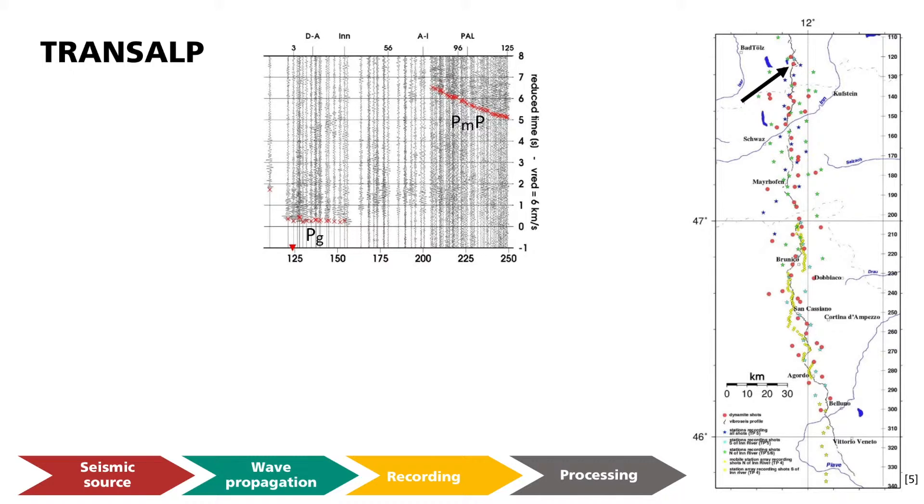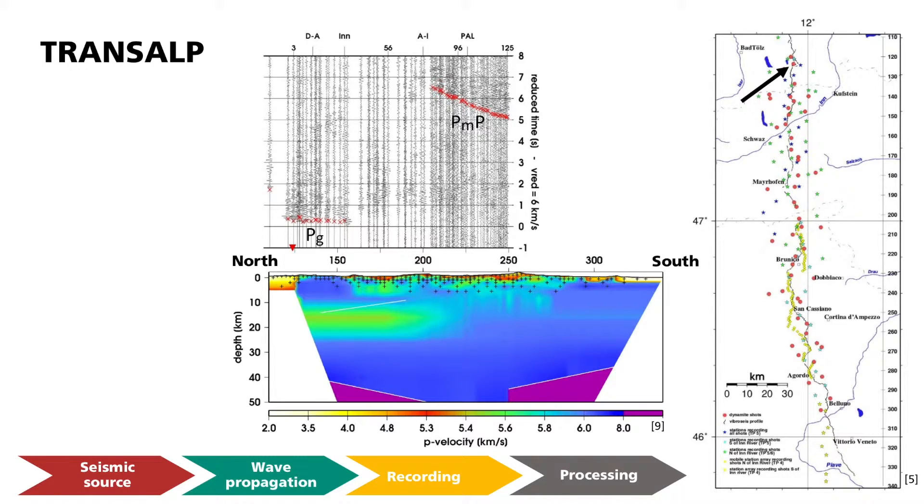The PMP-labeled phase represents the wave reflected at depth by the crust-mantle boundary, in short, referred to as MOHO. Here, the associated ray paths are shown, which are calculated using a velocity model. The red crosses in the seismic profile represent theoretical travel times that also result from the subsurface model. The match is very good on most of the traces.